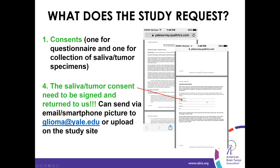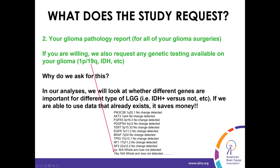In the future, we're hoping people will consider allowing us access through either the Health Kit or eventually a Fitbit for smartphone collection of neurocognitive as well as activity and sleep data. This is what the consent looks like if you go online. It is a bit long, but at the end it asks for your name, address — which is where you want us to send the saliva kit — email, signature, and date. Once you upload or email this, we can send the saliva kit out to you.